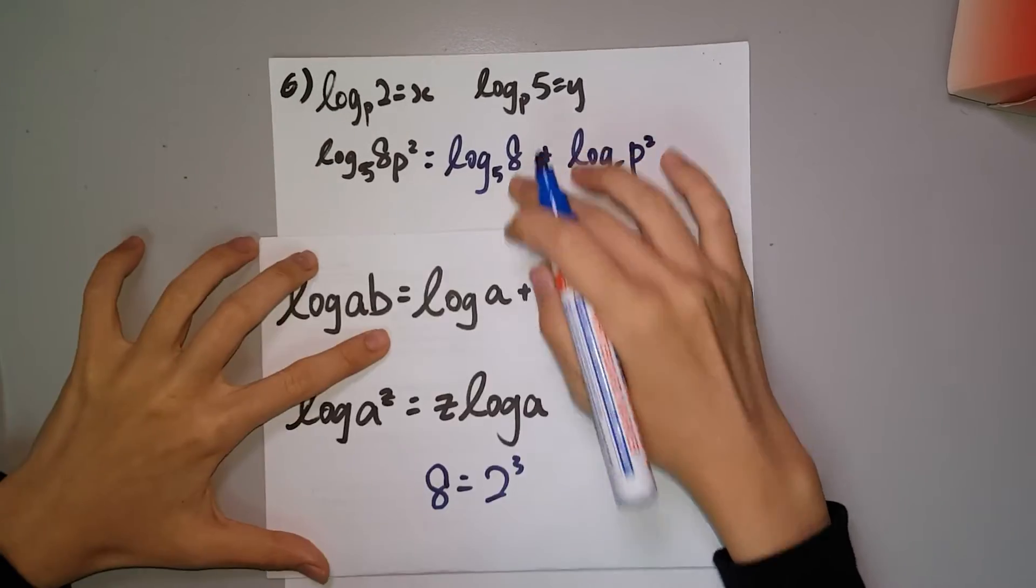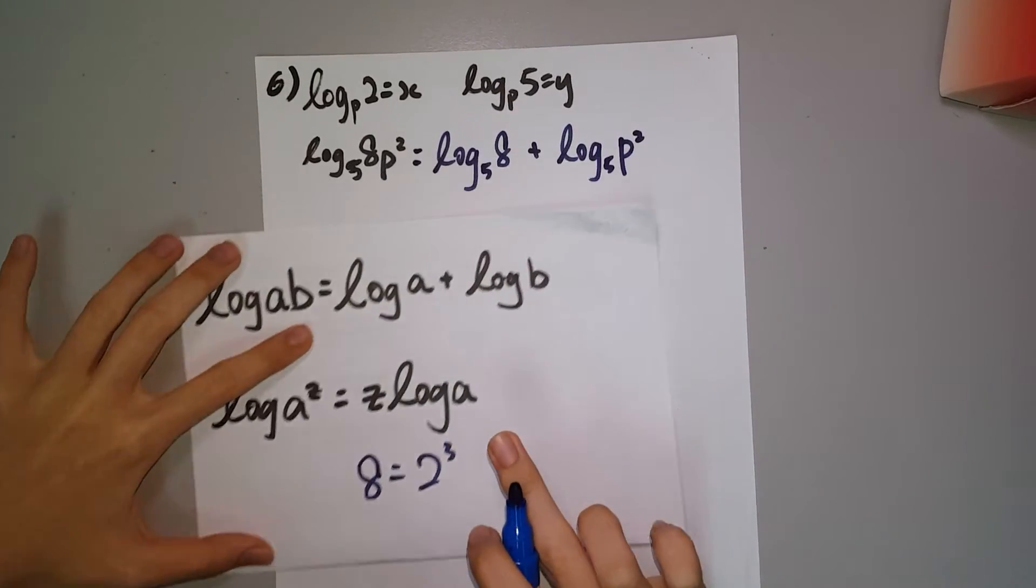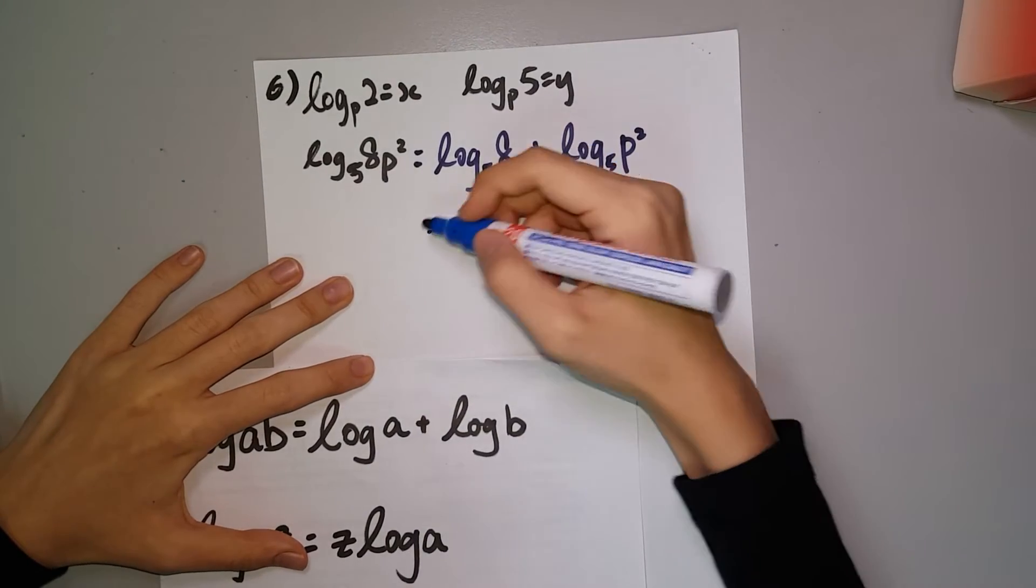As we know, A is equal to 2 to the power of 3. So we simplify it.